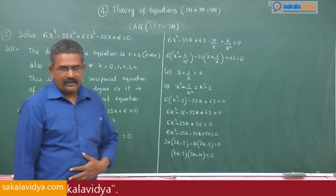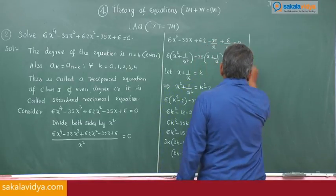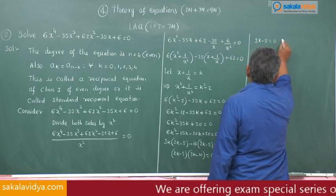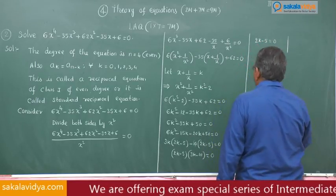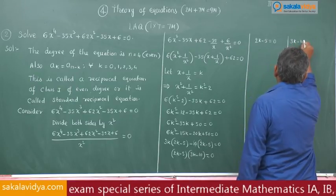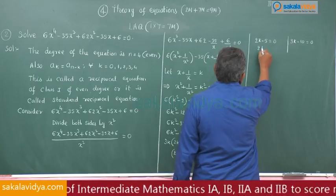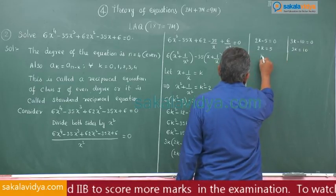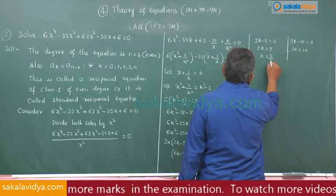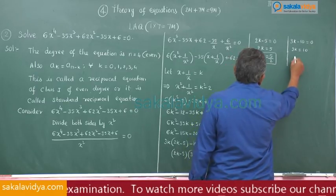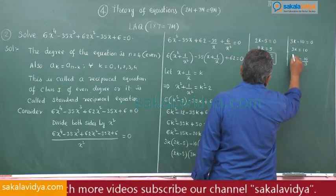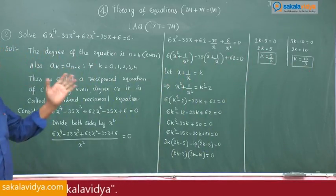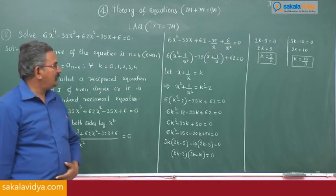Taking 3k common gives (2k minus 5), and taking 10 common gives 10(2k minus 5), so (2k minus 5)(3k minus 10) equals 0. From this, 2k minus 5 equals 0 gives k equals 5 over 2, and 3k minus 10 equals 0 gives k equals 10 over 3. Two cases arise: k equals 5 over 2 and k equals 10 over 3.